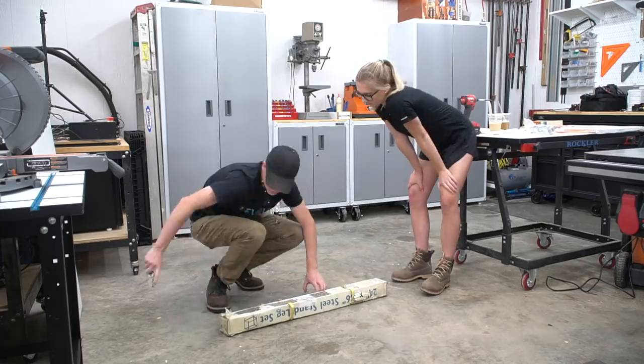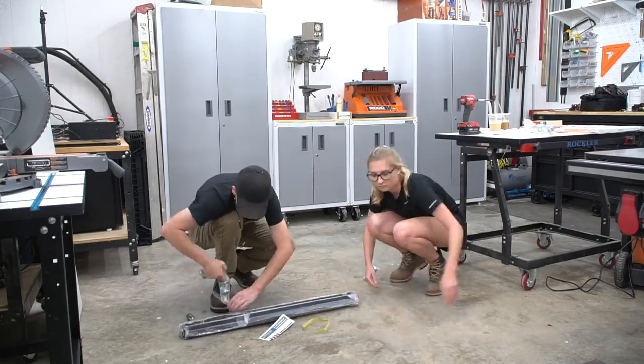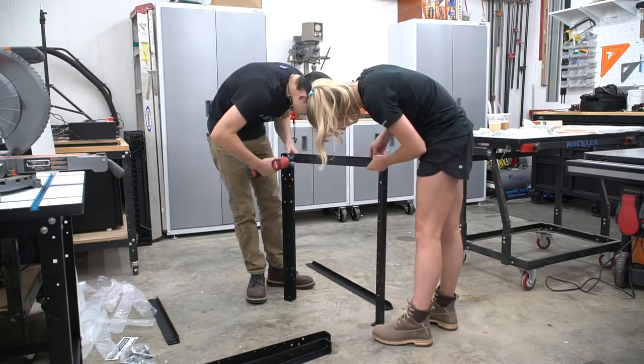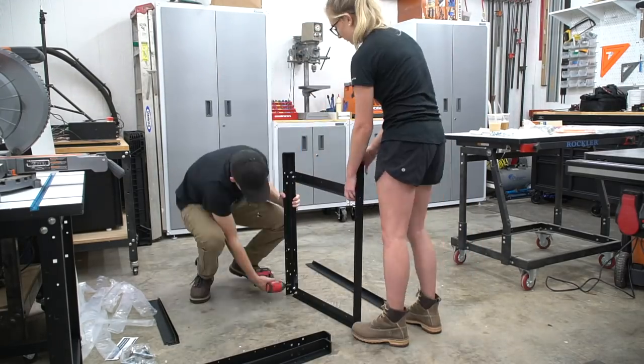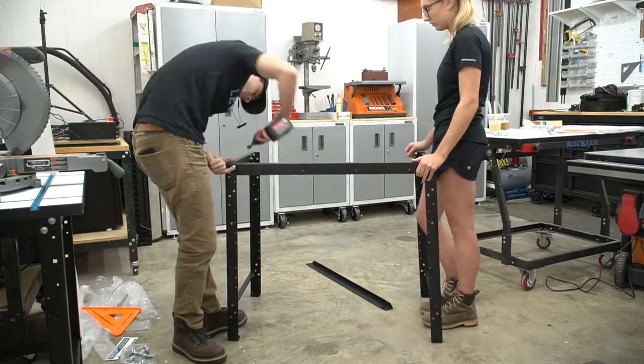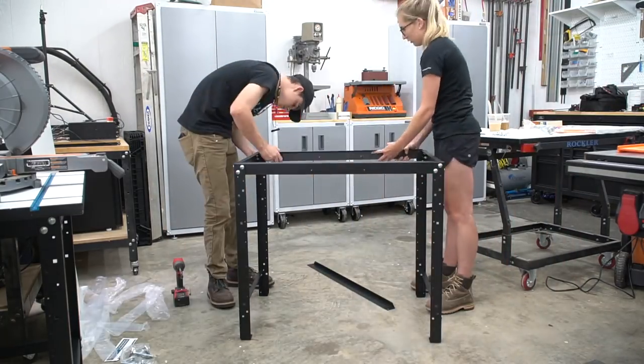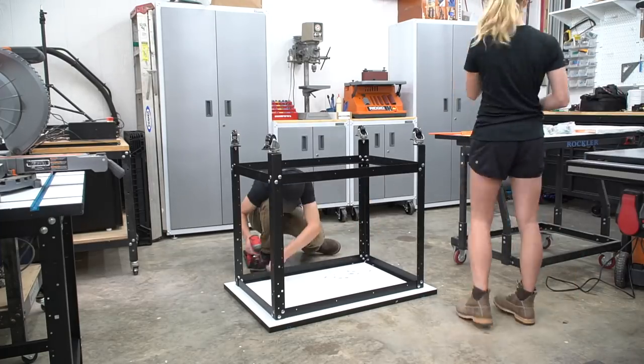The frame of this miter stand is made from Rockler's shop stands. These stands are customizable by offering stretcher lengths from 18 inches to 60 inches long and two leg lengths of 28 inches and 32 inches. All three of the stands we used are 24 inches by 36 inches, but the middle stand uses the shorter 28 inch legs.